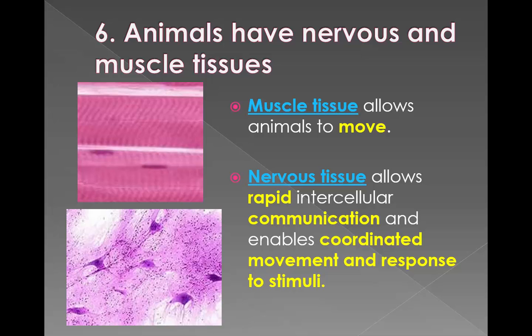The sixth characteristic is they have a nervous system and muscle tissue. The muscle tissue allows them to move, and the nervous tissue allows for rapid communication between cells, coordinating their movement and their response to stimuli.